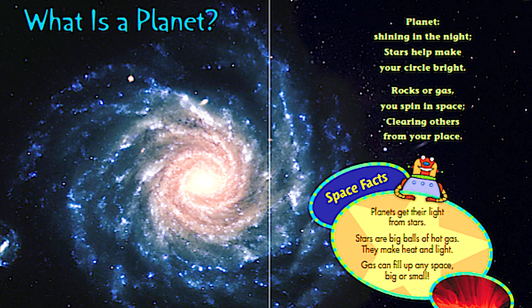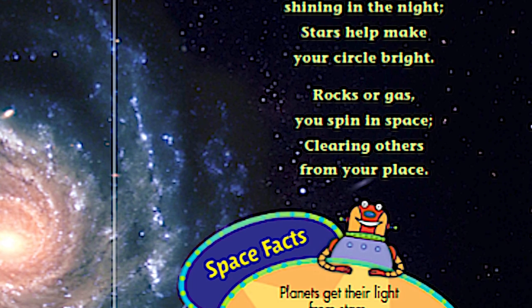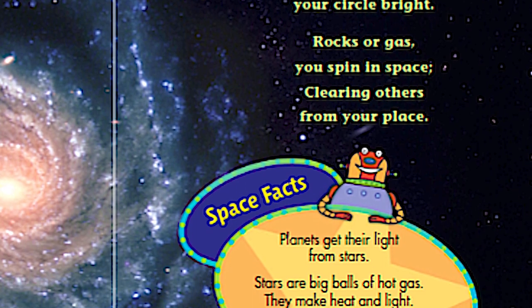Take a look at the title, What is a Planet? Here's a poem to give us a little idea of what a planet is. Planet, shining in the night, stars help make your circle bright. Rocks or gas you spin in space, clearing others from your place.